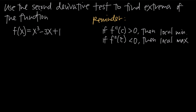As a reminder, the second derivative test tells us that if we find a critical point x equals c and we plug that critical point into the second derivative, evaluating f double prime of c, if we get a positive result (greater than zero), then that critical point represents a local minimum. If we get a negative value, then that critical point represents a local maximum.